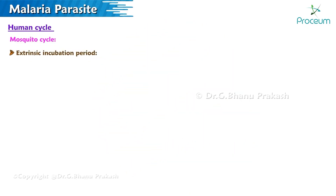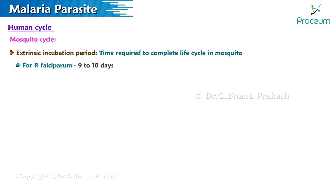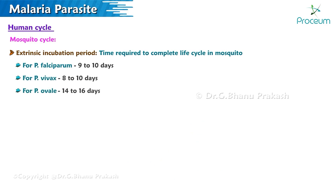The sporozoite is the infective stage injected into the human. The extrinsic incubation period is the time required to complete the life cycle in the mosquito: Plasmodium falciparum — 9 to 10 days; Plasmodium vivax — 8 to 10 days; Plasmodium ovale — 14 to 16 days; Plasmodium malariae — 25 to 28 days.